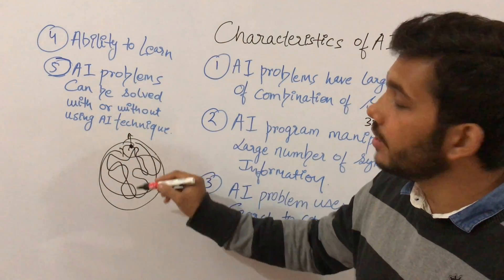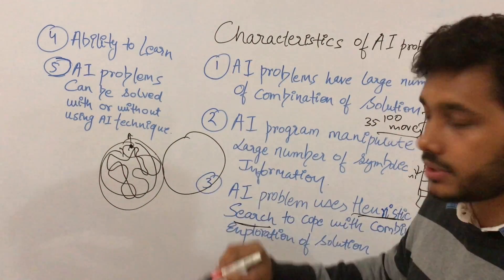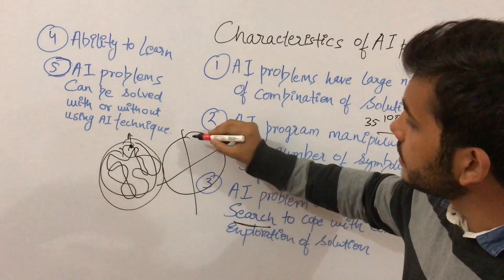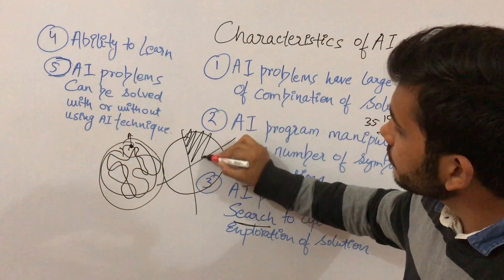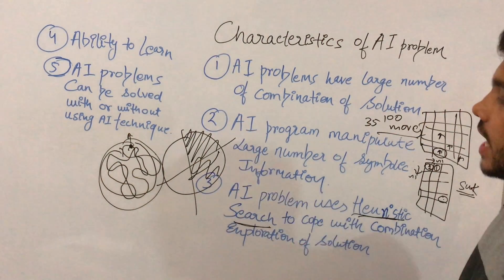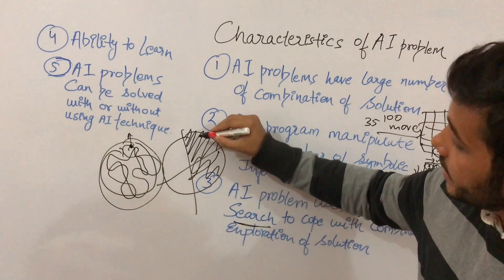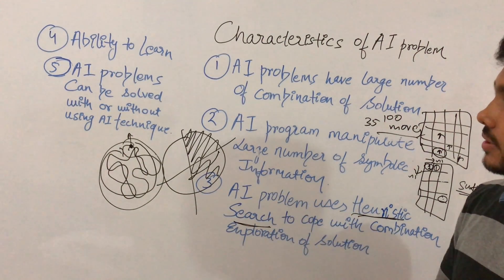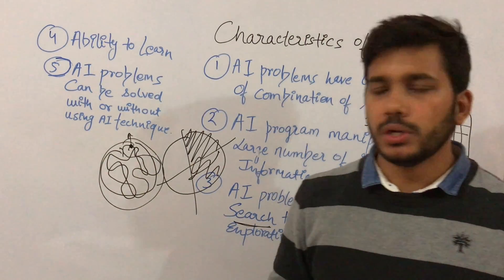Heuristic search is a type of guided search in which at every point you are guided where to move next. For example, it will divide the entire city into four parts and you move in a structured fashion — completing the first block before moving to the second. So heuristic search tells you at every point where you have to move next.